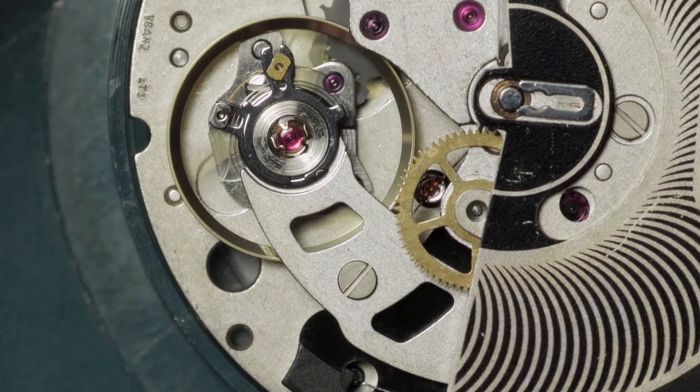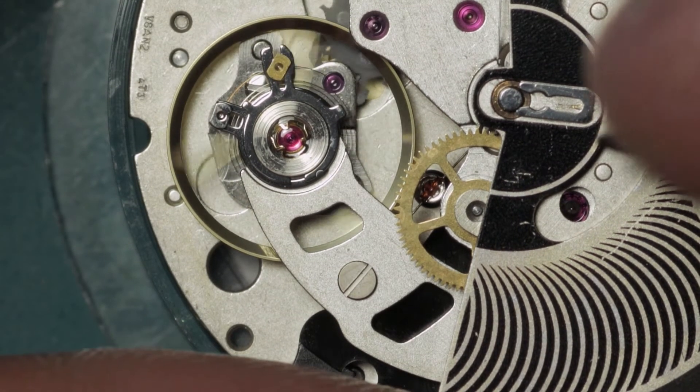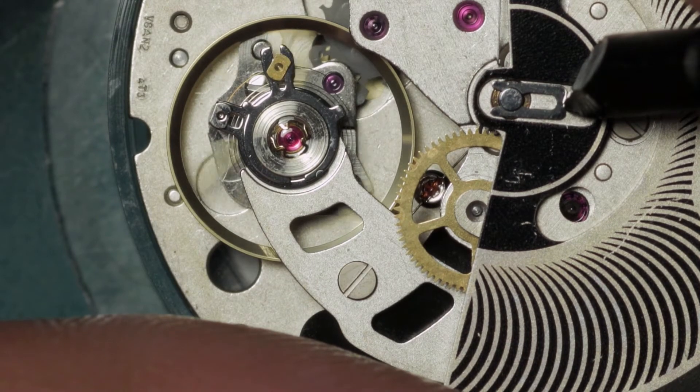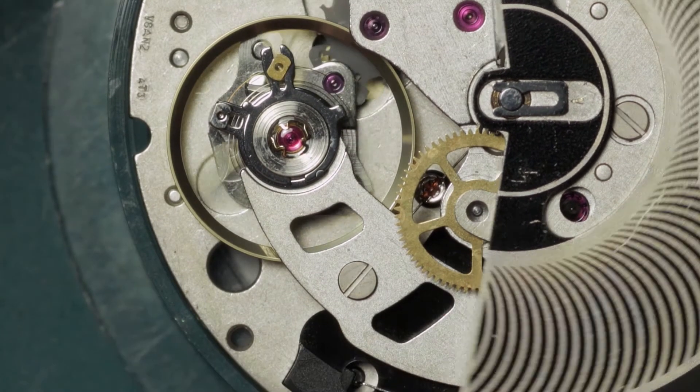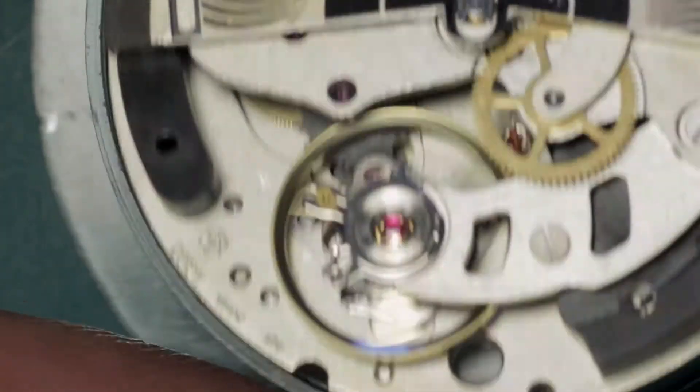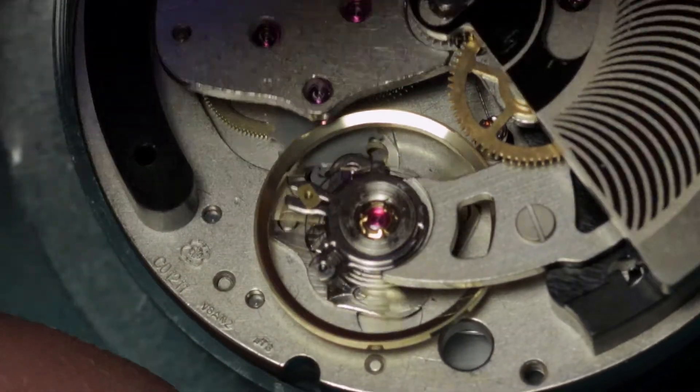So the spring clip that holds this in place simply drops in like so. And then using something soft—pegwood would do, but I tend to use a plastic piece for this—you just snap that in, and that will stop that coming loose.